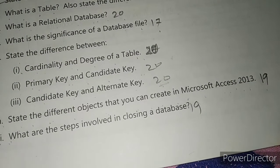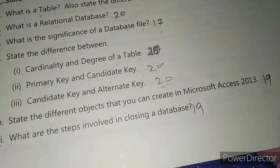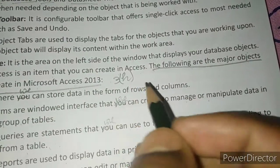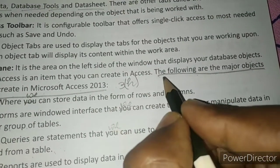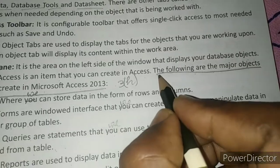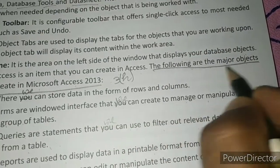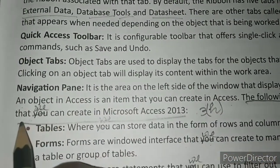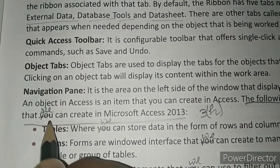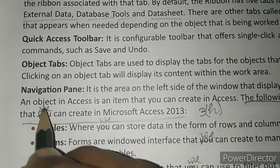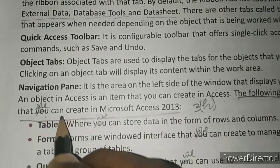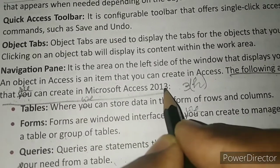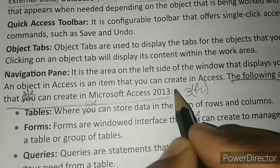Here at page number 19, the following are the major objects we can create in Microsoft Access. You will write: 'The following are the major objects we can create in Microsoft Access'.